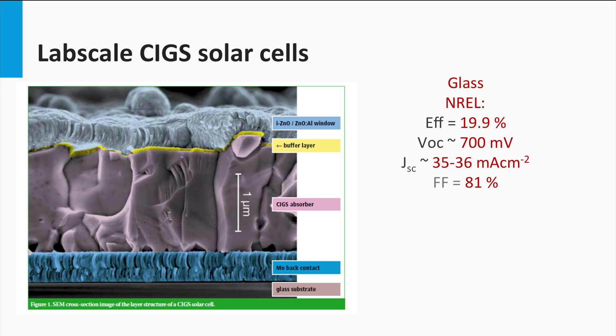An important advantage of the CIGS PV technology is that on lab scale it has achieved the highest conversion efficiencies among the thin film solar cells. Lab scale CIGS solar cells processed on glass have a record efficiency of 19.9% as achieved by National Renewable Energy Lab in the US.